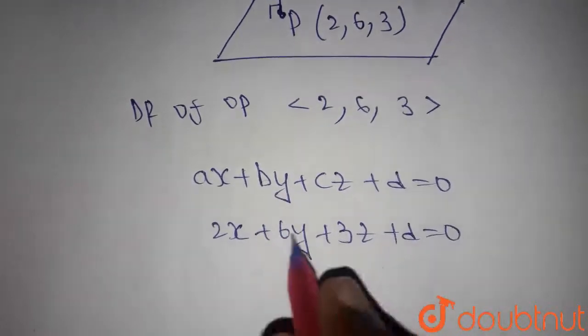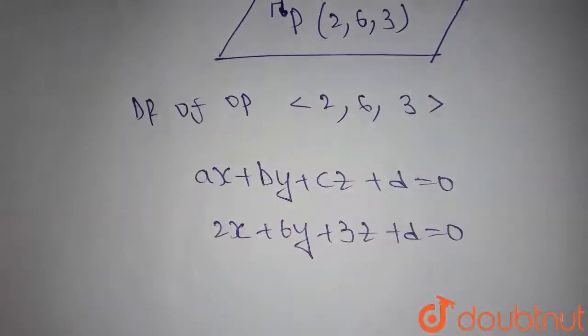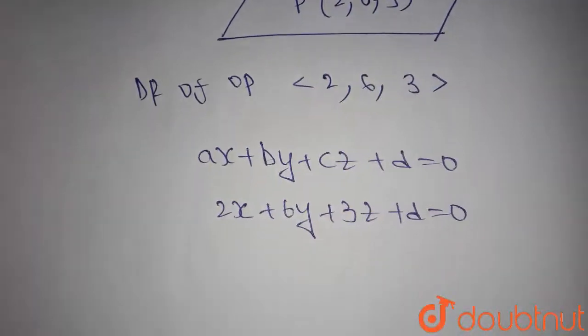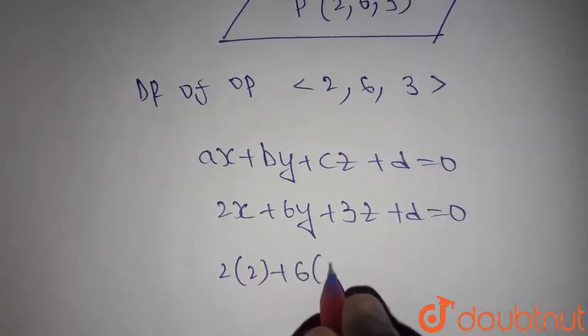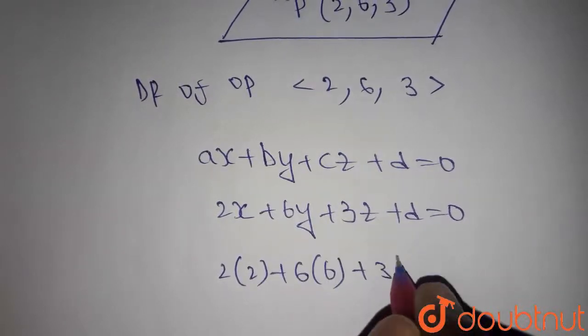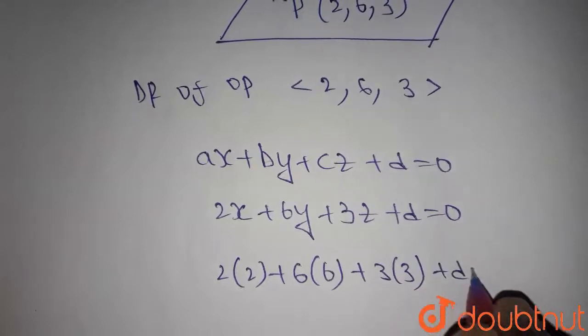Now we know that this plane passes through this point. Now substitute this point in this plane equation. We get 2×2 plus 6×6 plus 3×3 plus d equals 0.